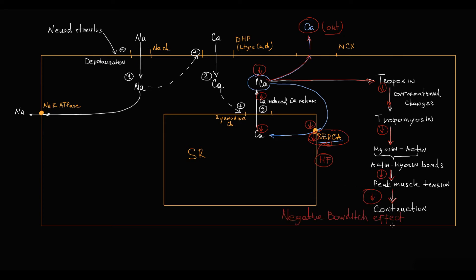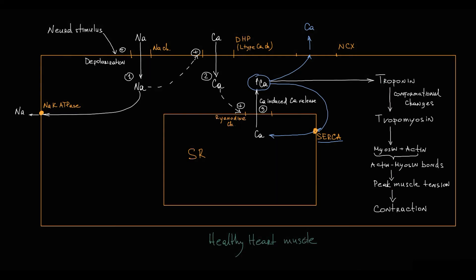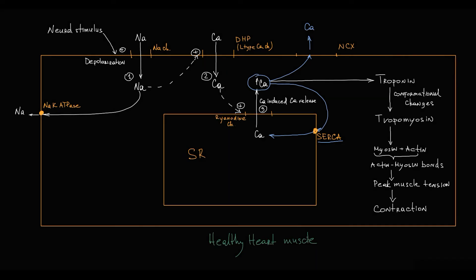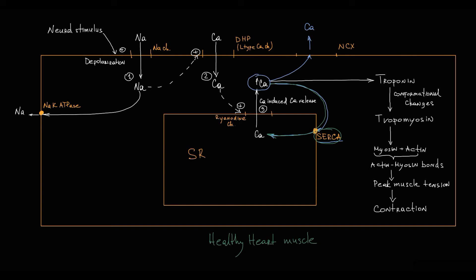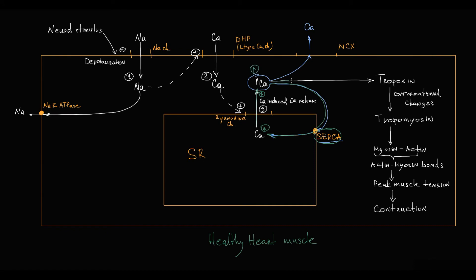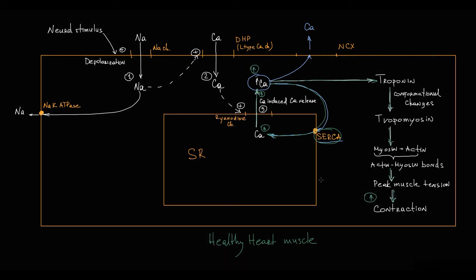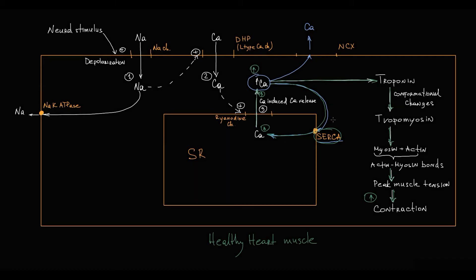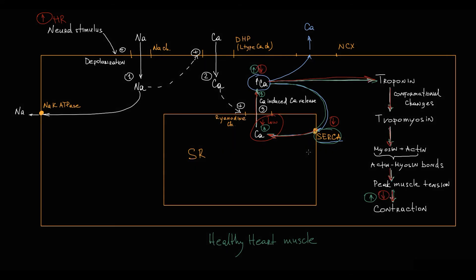So now we see that only a healthy heart muscle can induce the positive Bowditch effect, because only in normal conditions do cardiomyocytes have sufficient expression of SERCA protein to pump sufficient calcium from the cytoplasm into the sarcoplasmic reticulum, causing sufficient calcium release that subsequently increases cardiac contraction. In contrast, in a pathological state, because SERCA protein expression is decreased, increase in heart rate does not cause sufficient calcium accumulation in the endoplasmic reticulum, and thereby will not cause a sufficient increase in force of cardiac contraction.